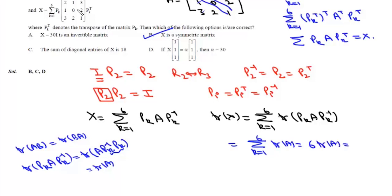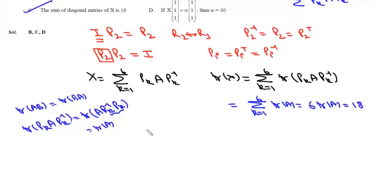What is trace of A? Trace of A is 2 + 0 + 1 = 3, and 6 times 3 is 18. So the sum of diagonal entries of X is 18, which is option C.